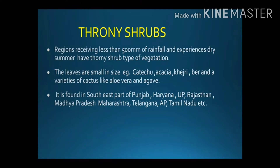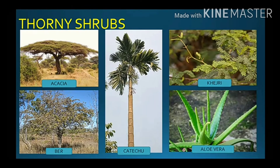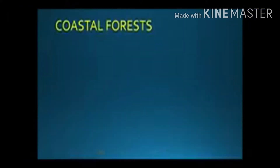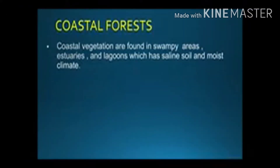Thorny shrubs are found in southeastern parts of Punjab, Haryana, Uttar Pradesh, Rajasthan, Madhya Pradesh, Maharashtra, Telangana, Andhra Pradesh, Tamil Nadu, etc.